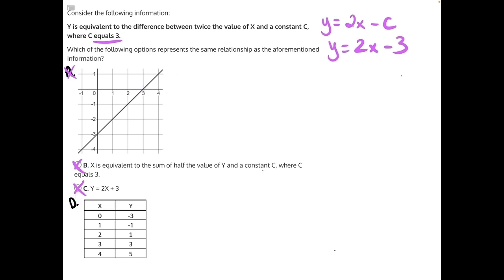For answer choice d, let's start by plugging in our first value of x. This is 0. y is equal to 2 times 0 minus 3. 2 times 0 is 0 minus 3 will give us negative 3, which matches the table.